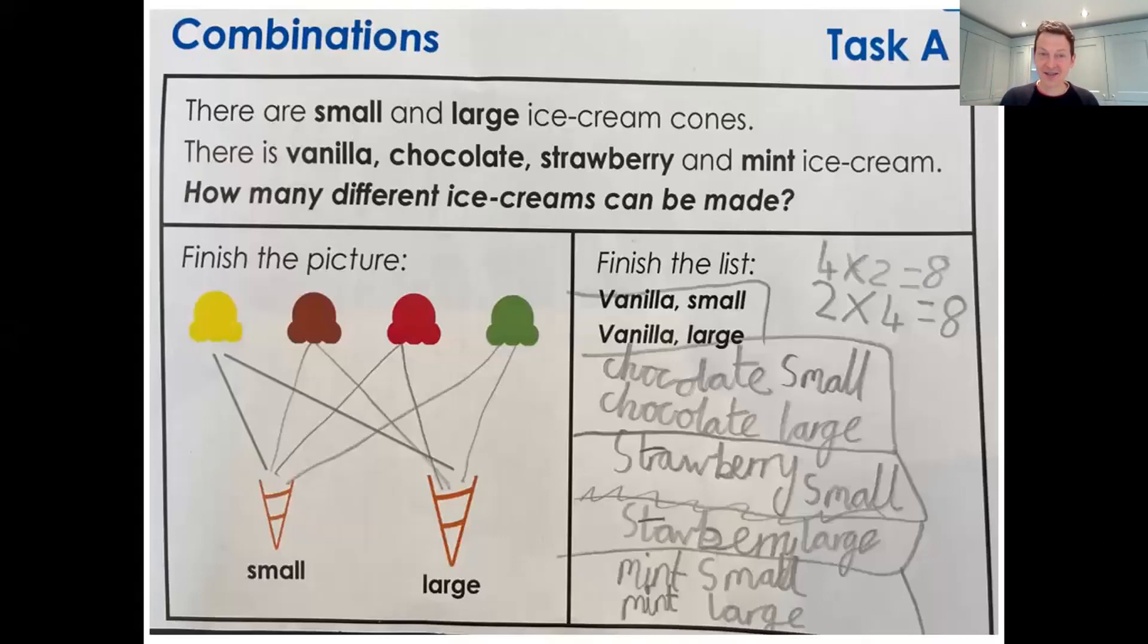That leads into the first task where we're finding the different combinations of ice creams that can be made. Lily asks the very natural question, can we have more than two flavors in the large ice cream cone? But anyway, she actually starts by writing out the different combinations and having done that, draws the lines. And having done that, then puts these boxes around the list that she created and sees it as for each ice cream flavor, there's two possible cones. So it's four times two, unprompted by me.